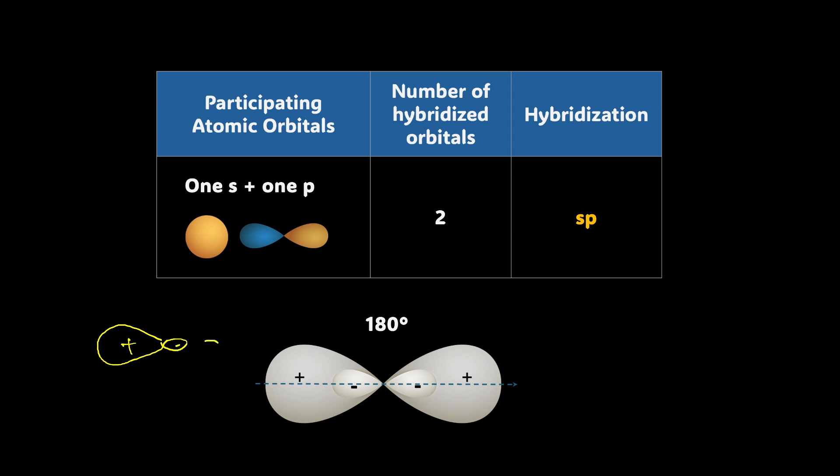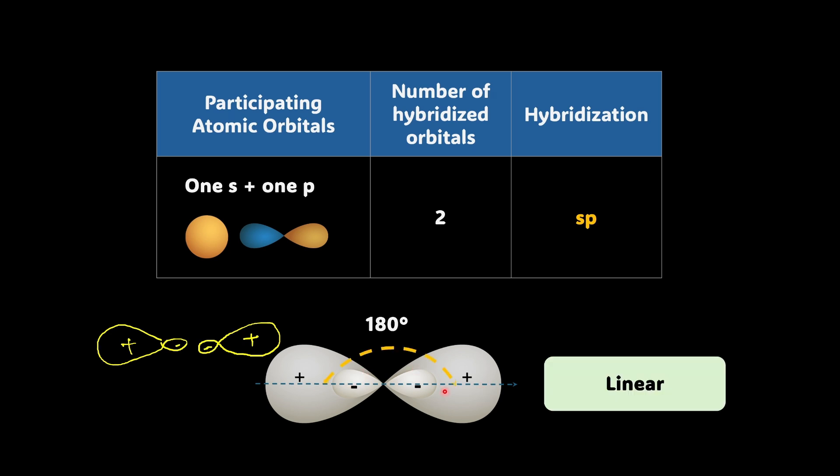And then there is another. This is the small one and this is the big one. So this is minus and this is plus. So you can see that these two lobes are pointing in opposite direction, forming a straight line with 180 degree angle between them. This linear arrangement helps minimize electronic repulsions, which makes the molecule more stable.